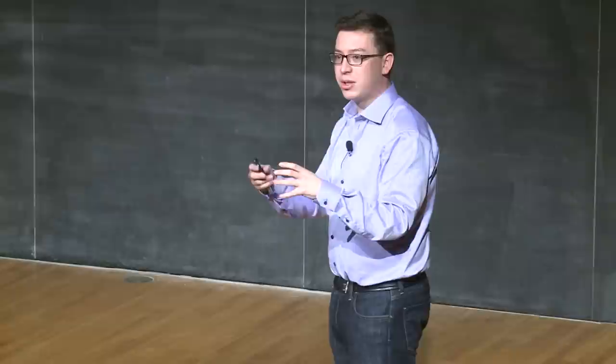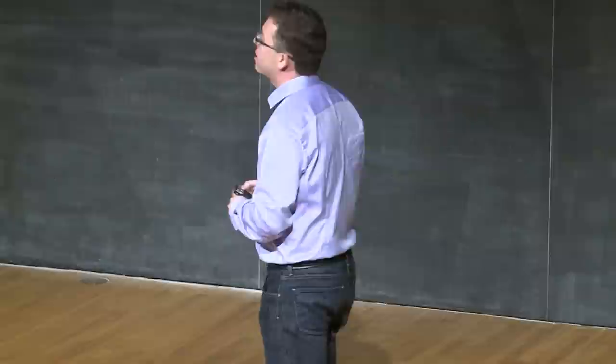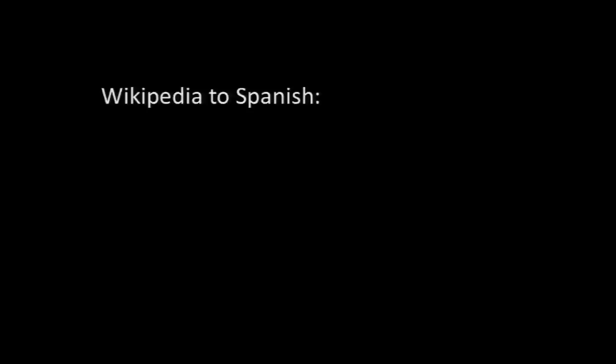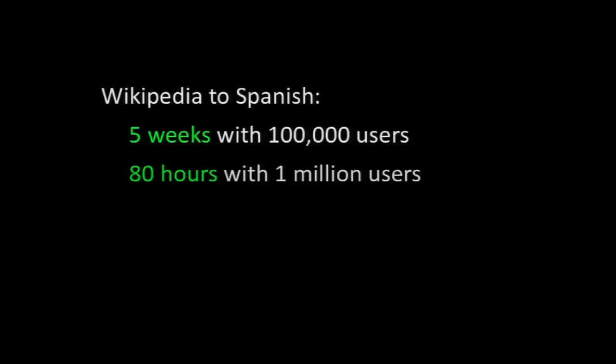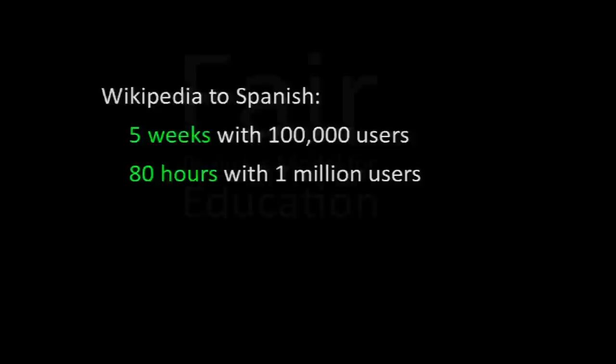Now, even though we're combining the translations, the site actually can translate pretty fast. So let me show you. This is our estimates of how fast we could translate Wikipedia from English into Spanish. Remember, this is $50 million worth of value. So if we wanted to translate Wikipedia into Spanish, we could do it in five weeks with 100,000 active users, and we could do it in about 80 hours with a million active users. Since all of the projects that my group has worked on so far have gotten millions of users, we're hopeful that we'll be able to translate extremely fast with this project.